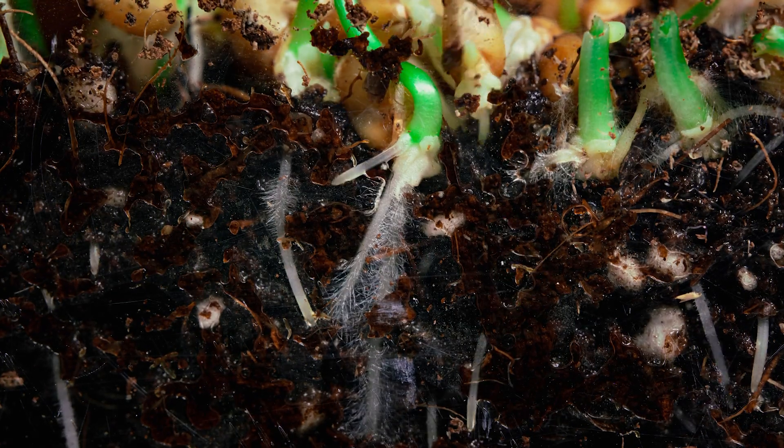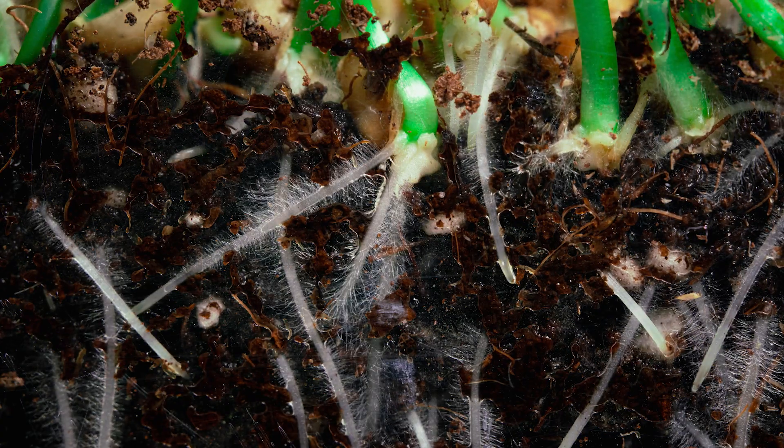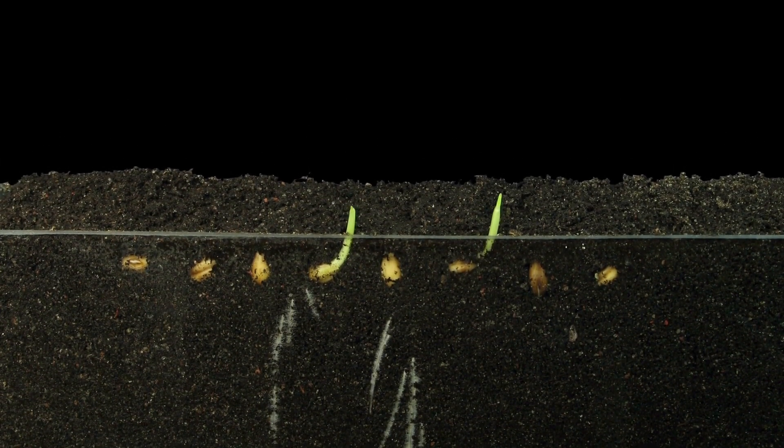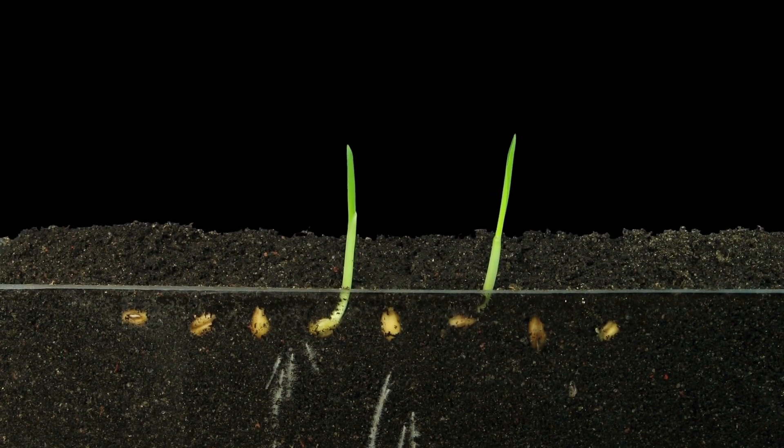These are essential for the plant's early development, as it still relies on the stored food inside the seed for energy. After the root is established, the next stage of growth begins. A shoot starts to grow upward, breaking through the soil and reaching for the light.